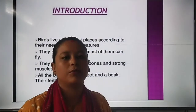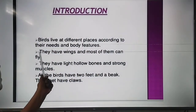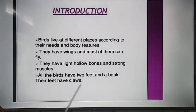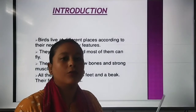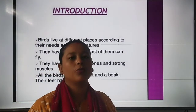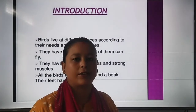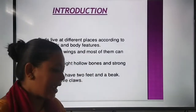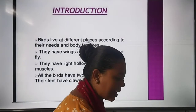In the last class we covered birds and their different types of feathers. Birds live at different places according to their needs and body features. Only birds can fly, not other animals, because birds have wings which help them to fly. Birds have hollow bones, which means empty from inside, making their body very light. Birds also have two feet, a beak, and claws.